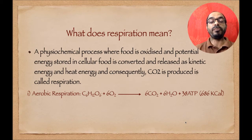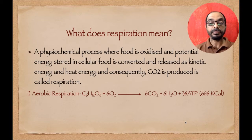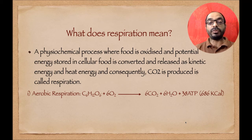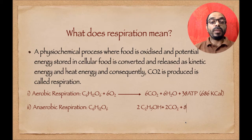ATP stands for adenosine triphosphate. When ATP is broken down, it converts into ADP and AMP. ADP means adenosine diphosphate and AMP means adenosine monophosphate. From one molecule of glucose, 38 ATP or 686 kilocalories of energy is produced.